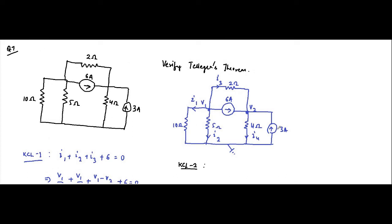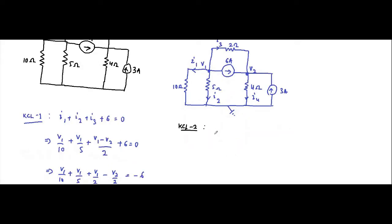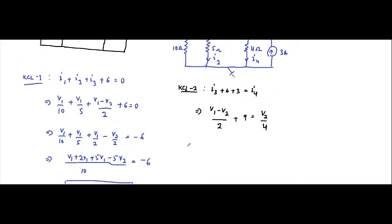Only i4 is flowing away, so: i3 plus 6 plus 3 equals i4. Here i3 is v1 minus v2 by 2, using higher potential minus lower potential divided by the resistor. So: v1 minus v2 by 2 plus 9 equals i4, and i4 is v2 by 4. That gives: v1 by 2 minus v2 by 2 minus v2 by 4 equals minus 9.